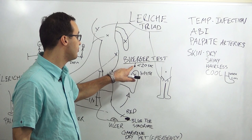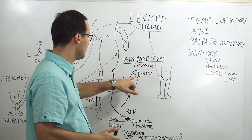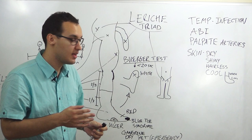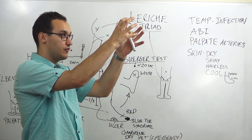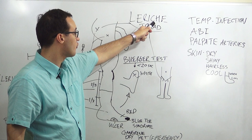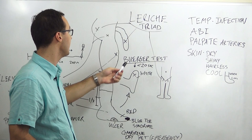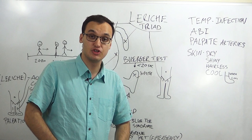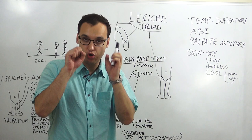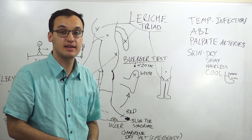The Buerger test: elevate the leg until it turns white, then lower it — it should turn red in less than 20 seconds. The Leriche triad is claudication, erectile dysfunction, and non-palpable femoral arteries. Remember: ankle-brachial index is very important. Palpate the arteries first, then perform ABI. Examine the skin — it should appear shiny and hairless, feel dry and cool. Thank you for listening.